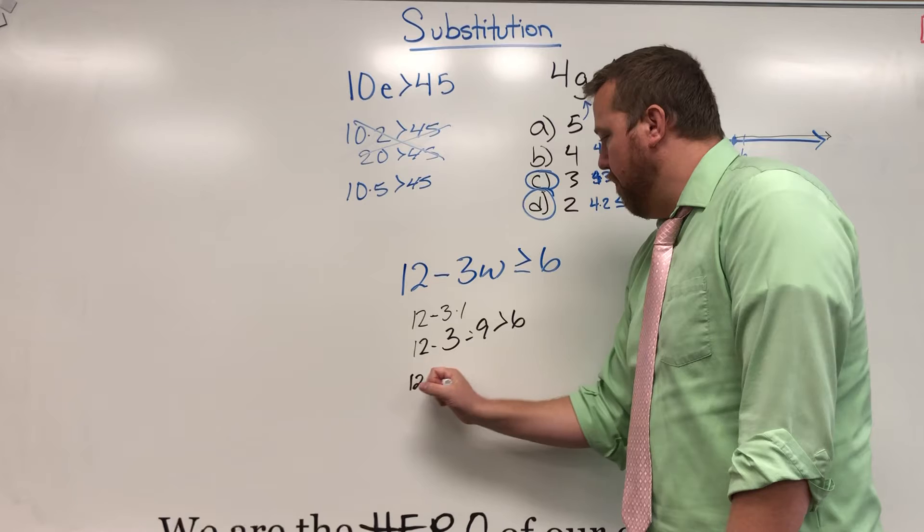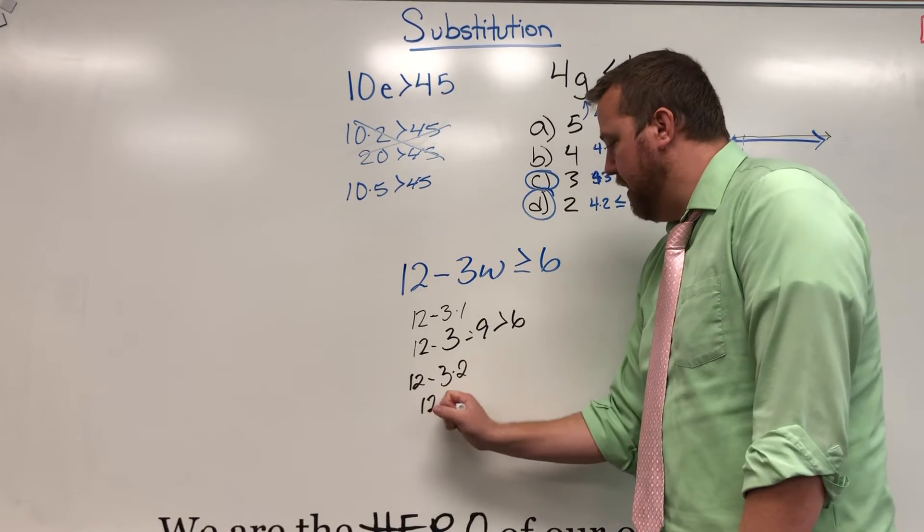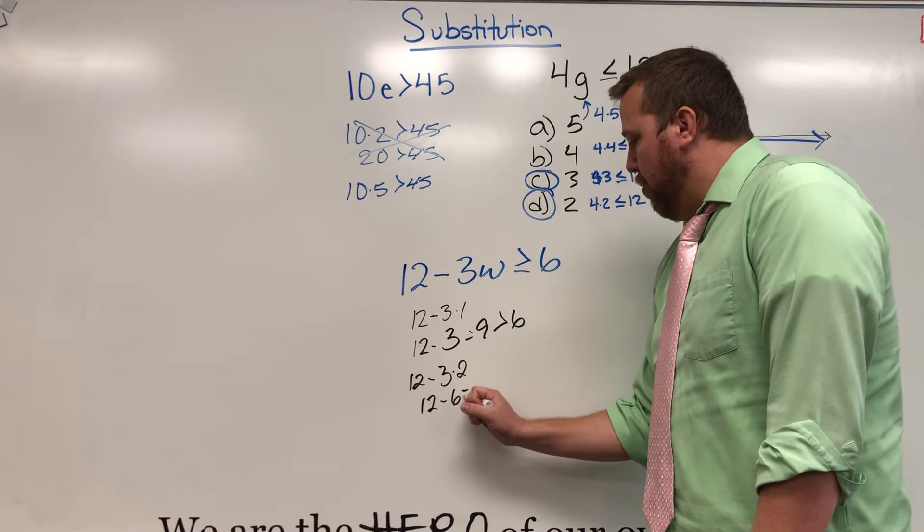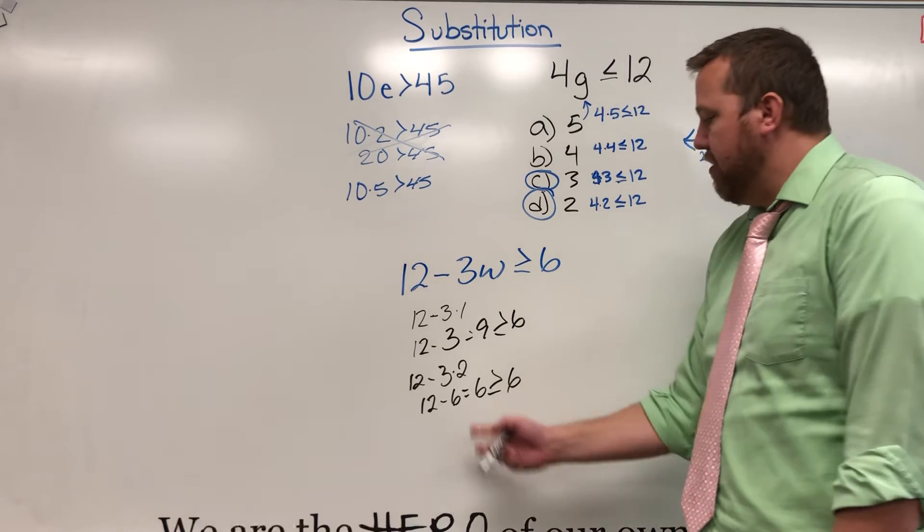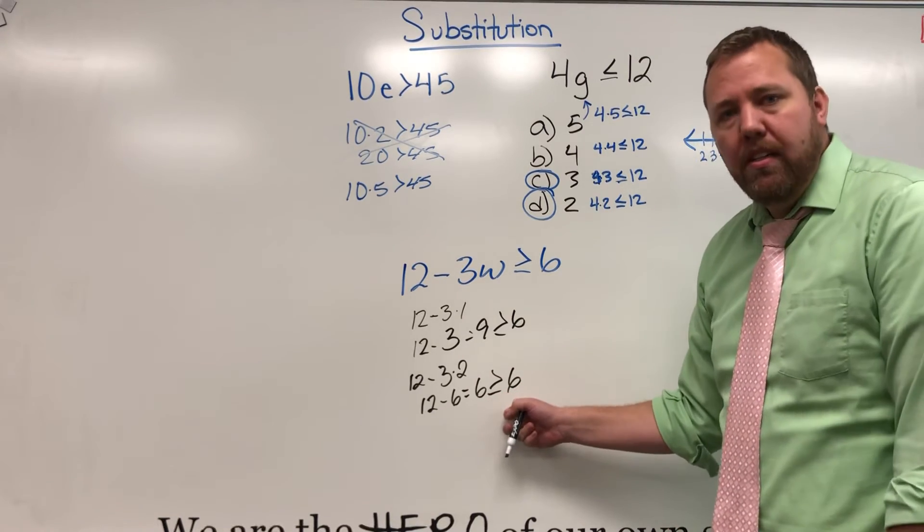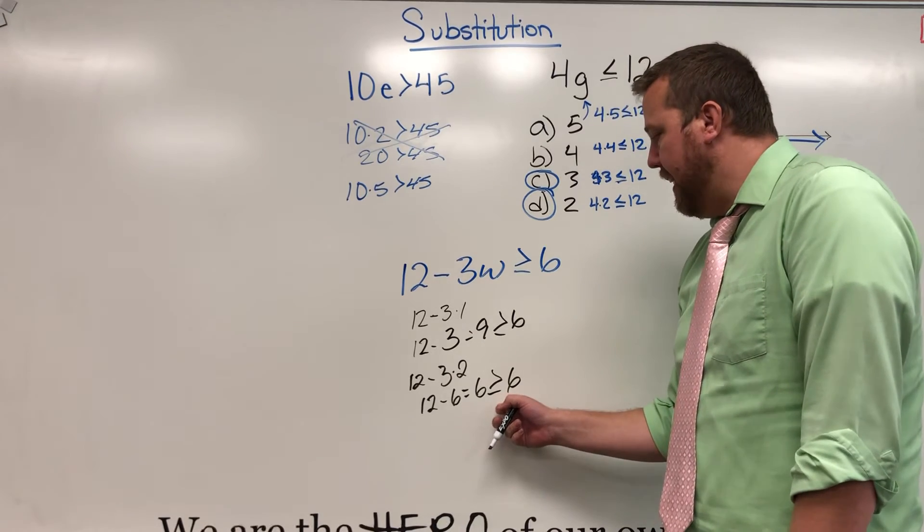12 minus 3 times 2. Do the multiplication first. 12 minus 6 equals 6. Is that greater than or equal to 6? 6 equals 6. So 1 and 2 are possible solutions for that.